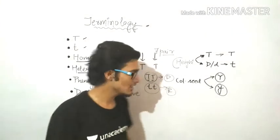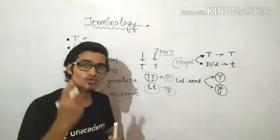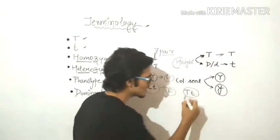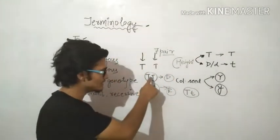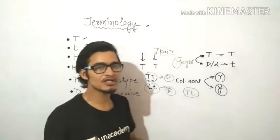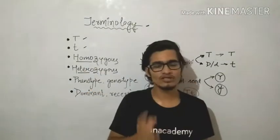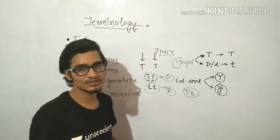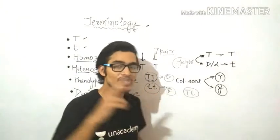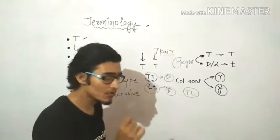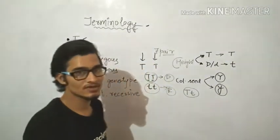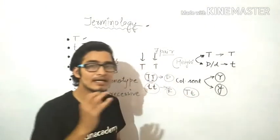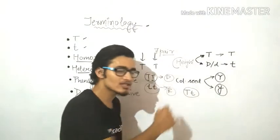Just opposite to that, there is another situation known as heterozygous. When the combination of two different factors is present — such as capital T small t — that is heterozygous. Capital T capital T is homozygous, small t small t is homozygous, but capital T small t is heterozygous because both factors are different. The overall expression will be tall — heterozygous dominant.